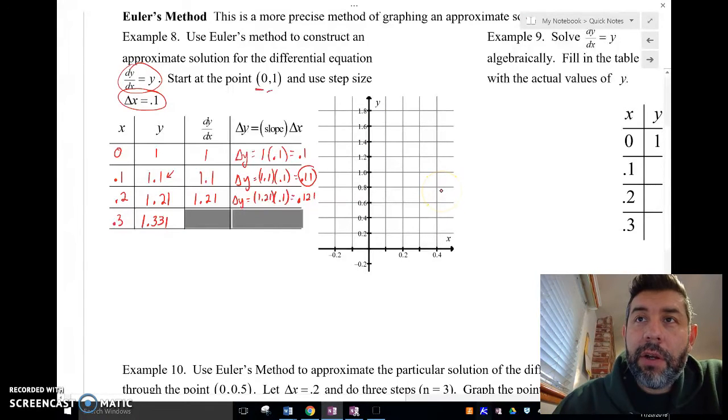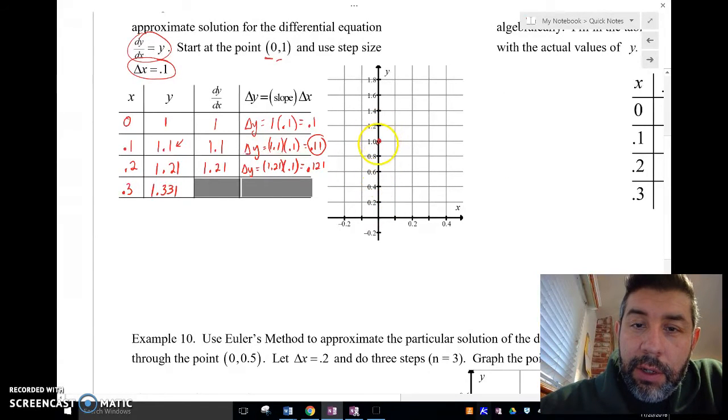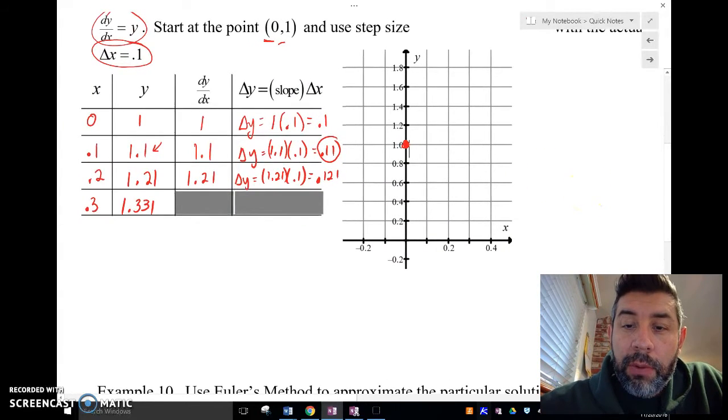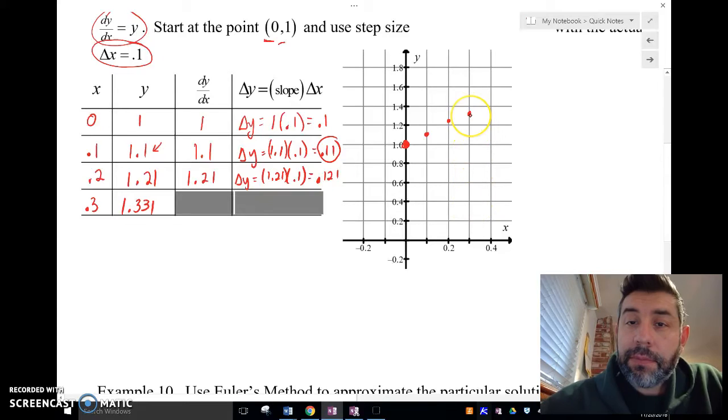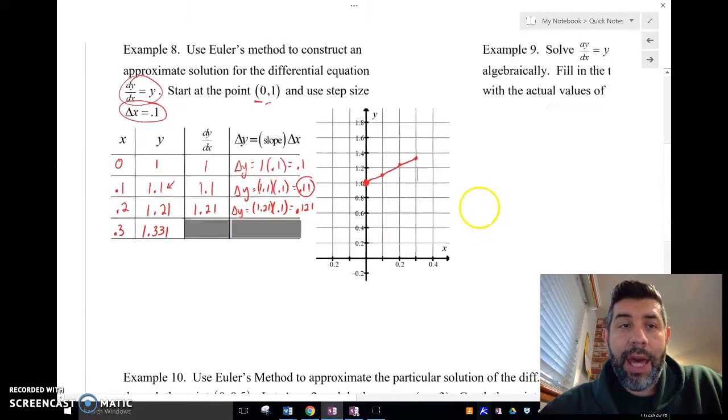So then I'm going to go over to my graph here. I'm going to go and plot these points for x and y. So 0 and 1 is right here. 0.1 and 1.1, here's 0.1, 1.1 is right here. 0.2 and 1.21 is right here. And 0.3 and 1.331 is about right here. And I'm going to connect those and it looks something like that. And that is Euler's method.